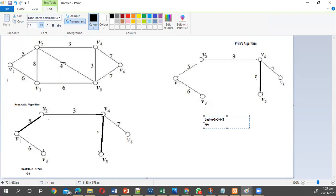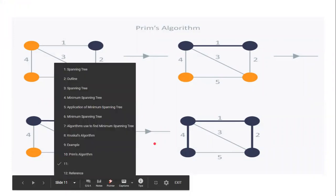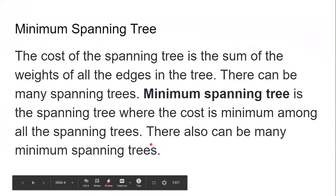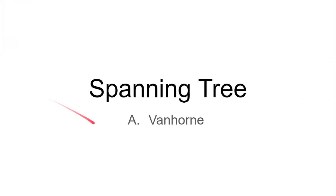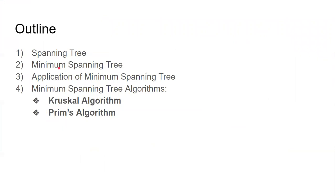We have looked at the two main algorithms used to calculate a minimum spanning tree. Thank you for joining, and I hope you have a good day. Please remember to go through these examples, and after reviewing, you should have a better understanding of the minimum spanning tree, its applications, and the two main algorithms — Kruskal's and Prim's — used to calculate the minimum spanning tree.